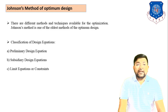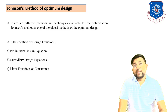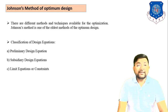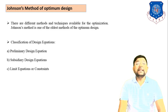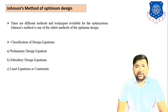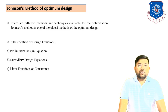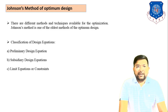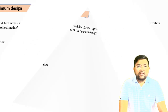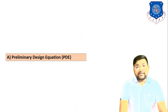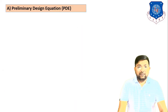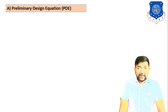The three types are: first, the Preliminary Design Equation; second, the Subsidiary Design Equation; and third, the Limit Equation or Constraint. So the classification of design equations covers these three types, which we will now discuss in detail.